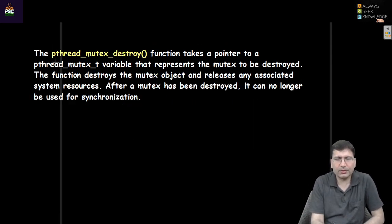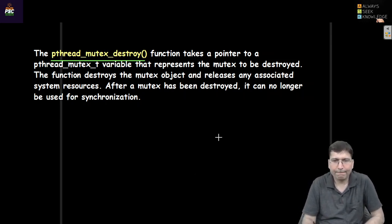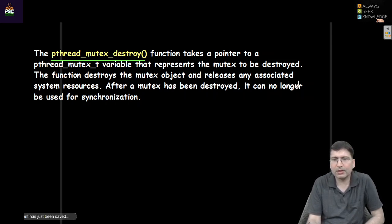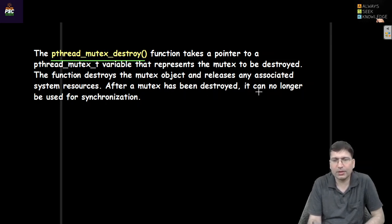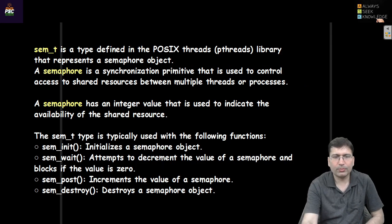The last function we need in the context of mutex is pthread_mutex_destroy. As the name suggests, this function can destroy a mutex which we have declared or initialized earlier. This variable represents the mutex to be destroyed. The function destroys the mutex object and releases any associated system resources. After the mutex has been destroyed, it can no longer be used by any synchronization mechanism.